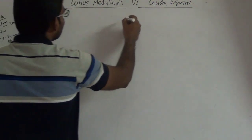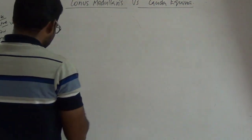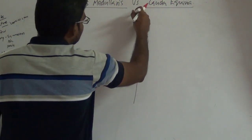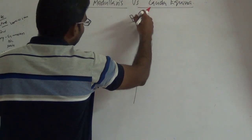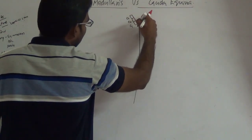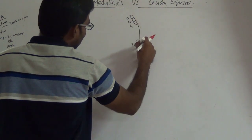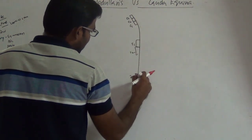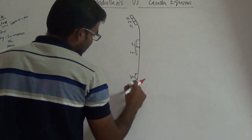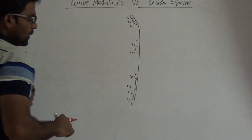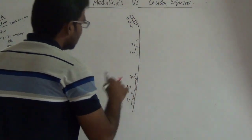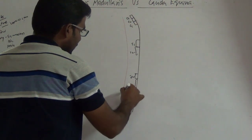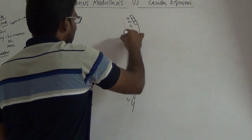Looking at the vertebral column, it has the cervical vertebrae C1, C2, C3 and so on, then the thoracic vertebrae T1 through T12, and then the lumbar vertebrae L1, L2, L3 and so on. The spinal cord ends somewhere around L1 or L2.